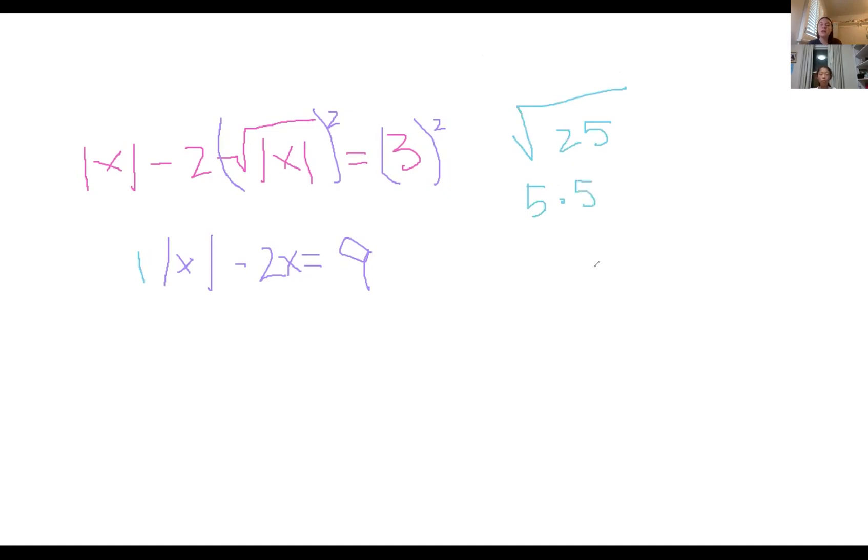So when you take the square root of x, what it's asking is like what number, we'll just say y, what number times itself is going to equal x. And so in order to take out the square root, what you want to do is you can't find out with x because it's a variable.